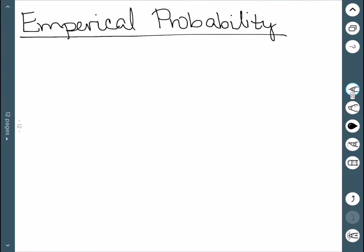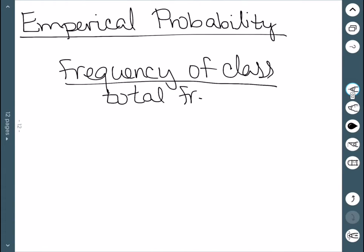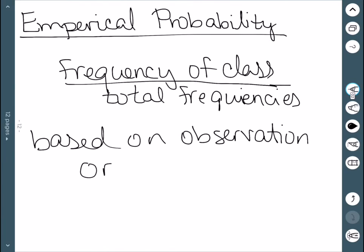The other type of probability we'll look at is called empirical probability. In this one, we look at the frequency of the class divided by the total frequencies. The main difference between classical and empirical is that classical probability is done using equally likely events, whereas empirical probability is typically based on an observation or an experiment — things that we actually observe or measure, and then calculate probabilities accordingly.